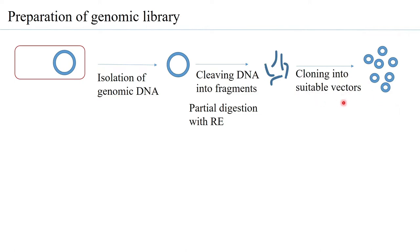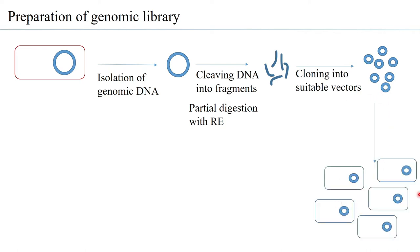Mostly partial digestion is carried out, but complete digestion can also be used. Partial digestion generally gives fragments that are more or less similar in size. These fragments are then cloned into suitable vectors. Suitable vectors have different capacities for inserting DNA — the insert size is a limitation for any particular vector. For example, plasmid DNA can take up an insert of around 15 KB or less. Based on fragment size, one must select an appropriate vector. Once cloned, the fragments are transfected into bacteria.